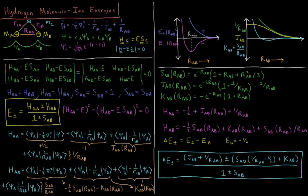Our Hamiltonian in the Born-Oppenheimer approximation in atomic units is the kinetic energy of electron one: minus one-half del-squared one. Since our nuclei are considered fixed under the Born-Oppenheimer approximation, their kinetic energy is zero. We have minus one over R1a, the attraction of electron one to nucleus A; minus one over R1b, the attraction of the electron to nucleus B; plus one over Rab, the distance between nucleus A and nucleus B.